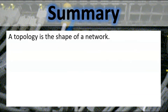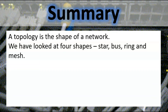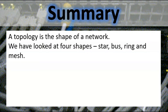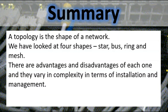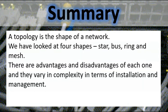In summary, a topology is the shape of a network. We have looked at four shapes: star, bus, ring, and mesh. There are advantages and disadvantages of each one, and they vary in complexity in terms of installation and management. Thank you for watching — please like and subscribe.